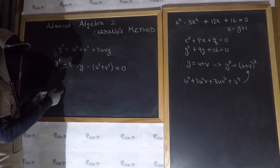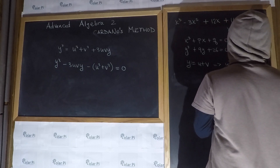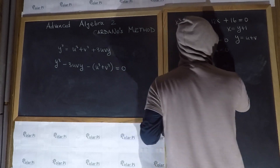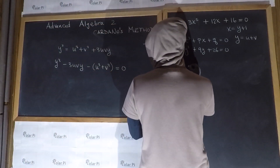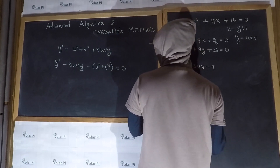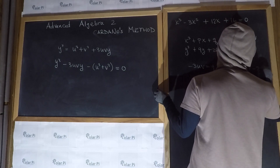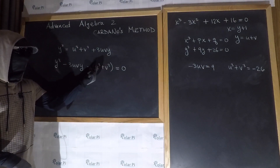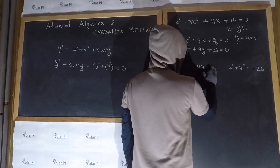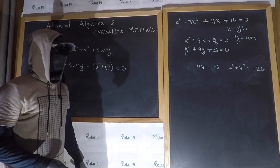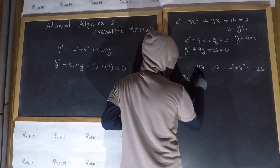Now we compare this to the depressed cubic. That means -3uv = 9, and u³ + v³ = -26. Yes, negative 26 — not an accident, right? Because if this is negative 26, I'll have negative, negative 26, and therefore a positive 26. Now dividing by -3 on both sides, uv = -3. And then we can say that u³v³ = -27.